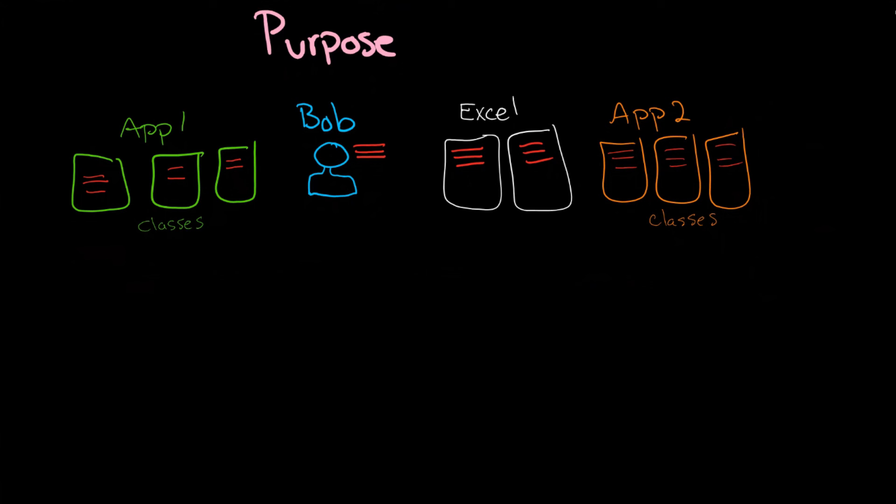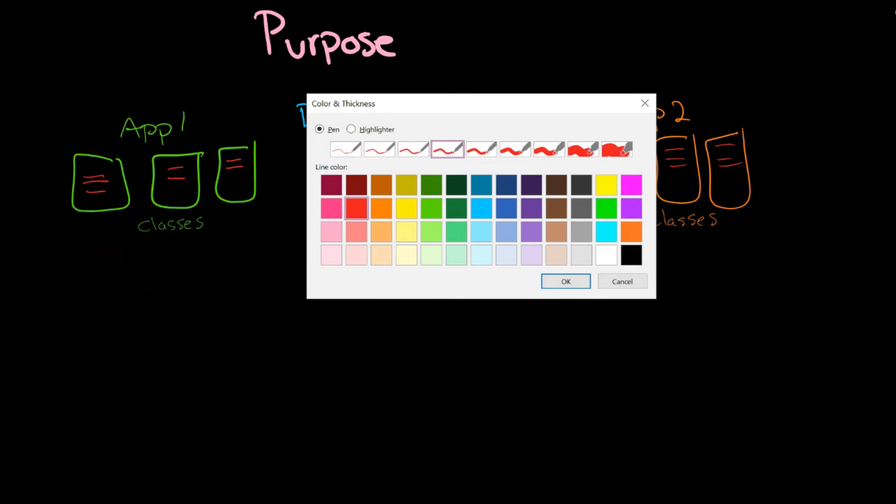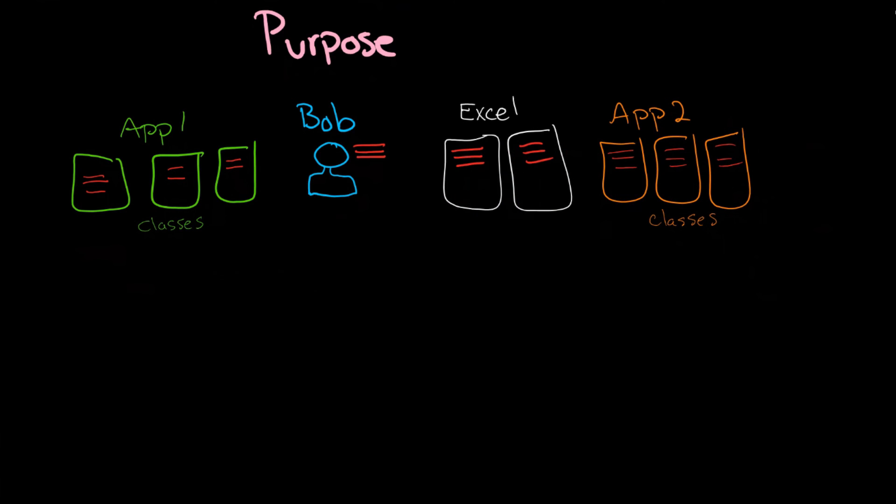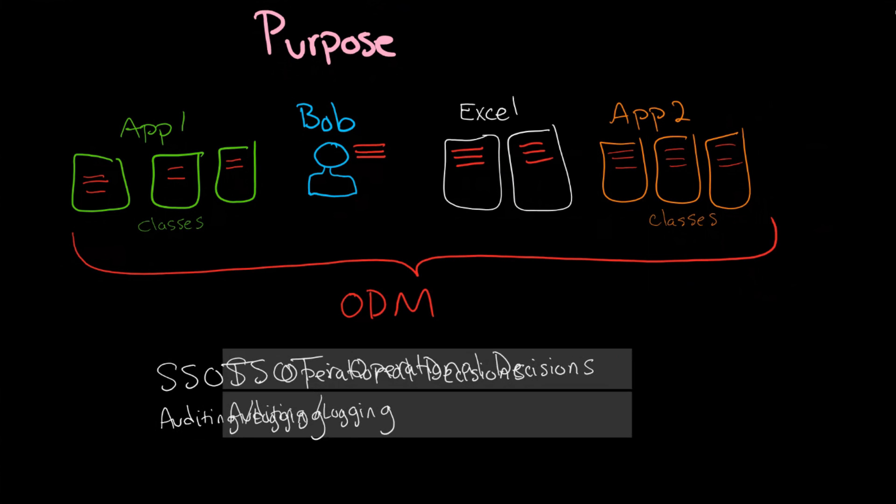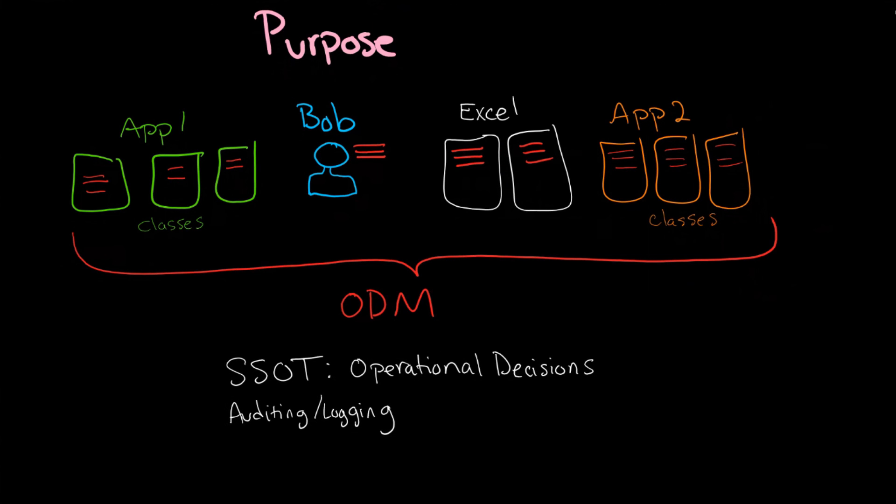So the purpose of ODM is to extract out all these rules from all of these various sources into a single point, a single place. You can consider that to be a single source of truth, or SSOT, where you take these operational decisions and bring them into a single system.